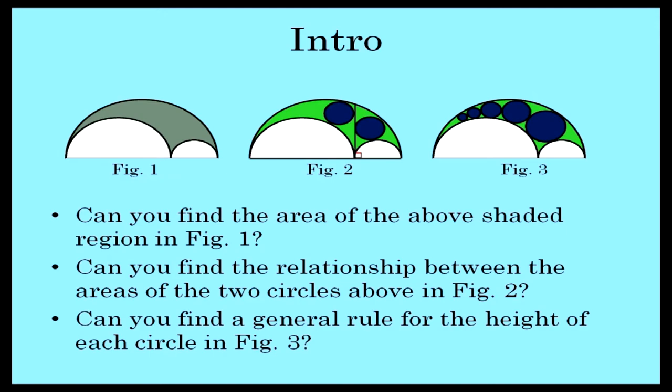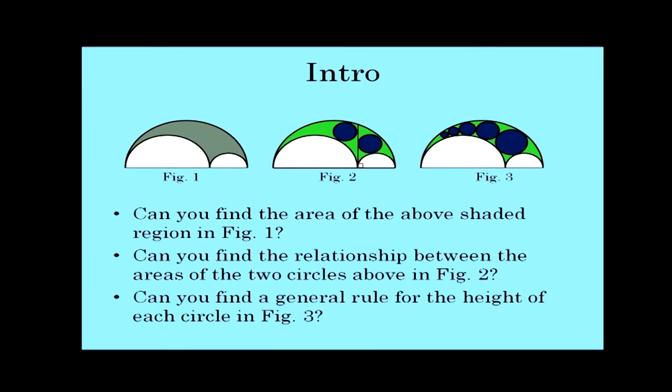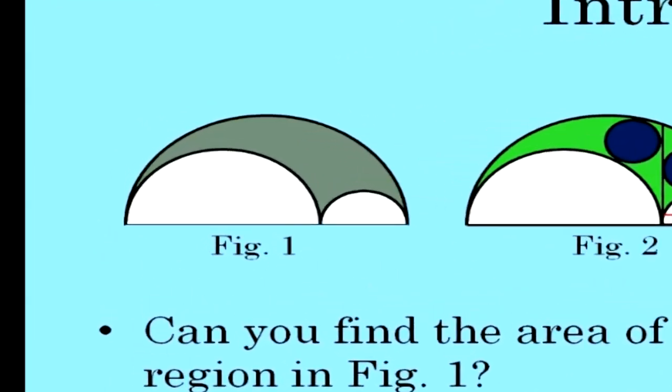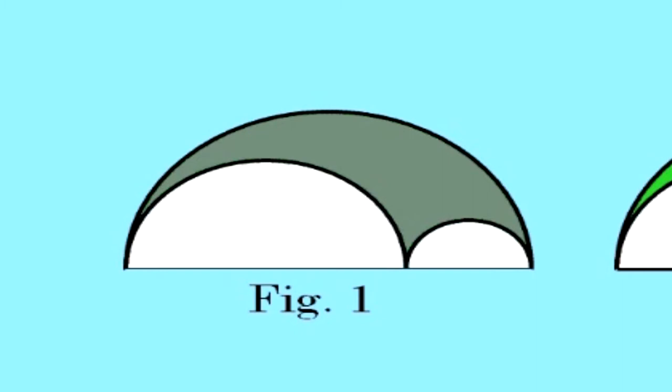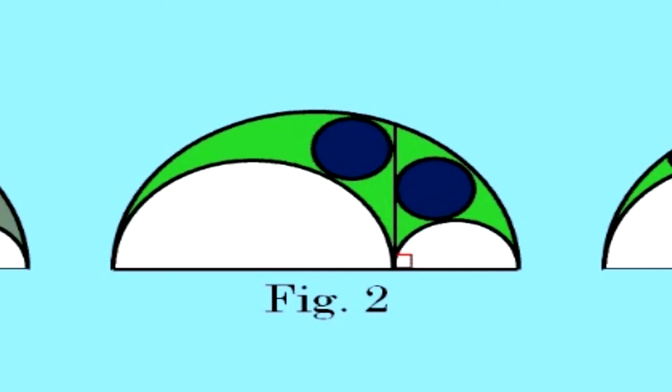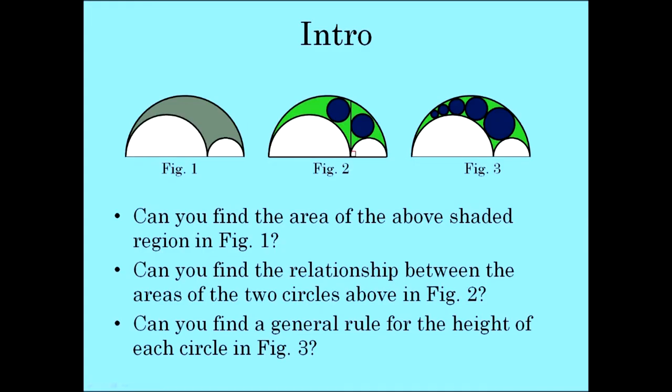Just as a bit of an introductory part of the lesson, I wanted to pose a few questions for you. For Figure 1, can you find the area of the shaded region? For Figure 2, can you find the relationship between the areas of these two blue circles that are tangent to these semicircles and tangent to this altitude? And in Figure 3, can you find a general rule for the height of each circle, or the radius of each circle? This presentation will actually address all three of these questions and ideally even more than that.